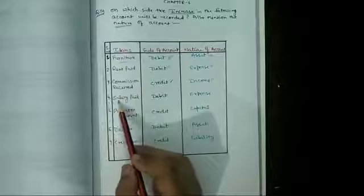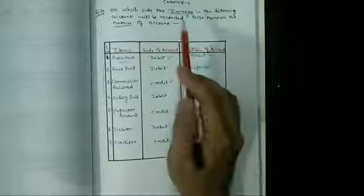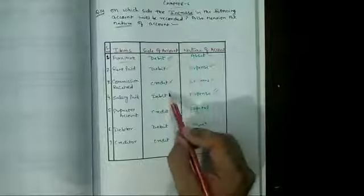Now the fourth one is salary paid. हमने salary pay की, हमारा क्या है? Expense. और expense हमारा जब increase होता है तो वो debit होता है.